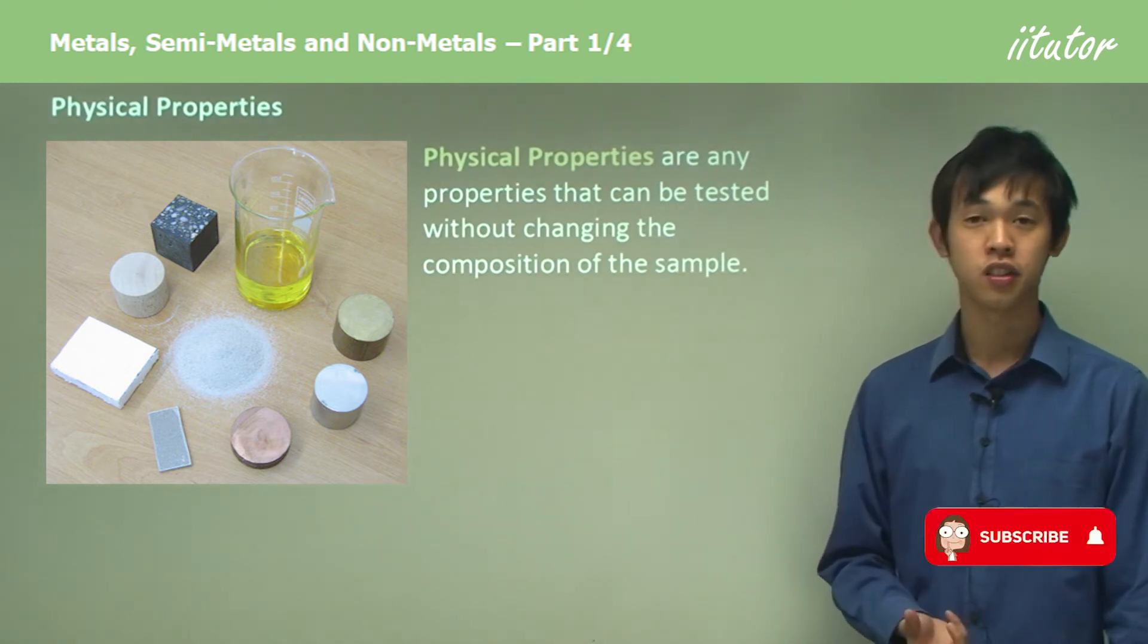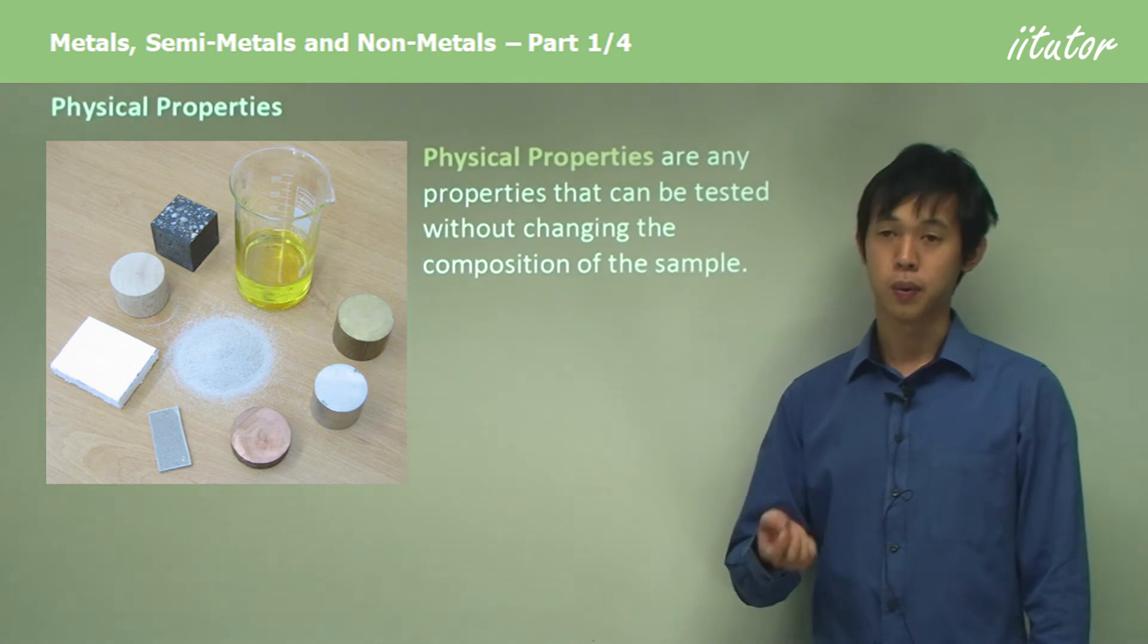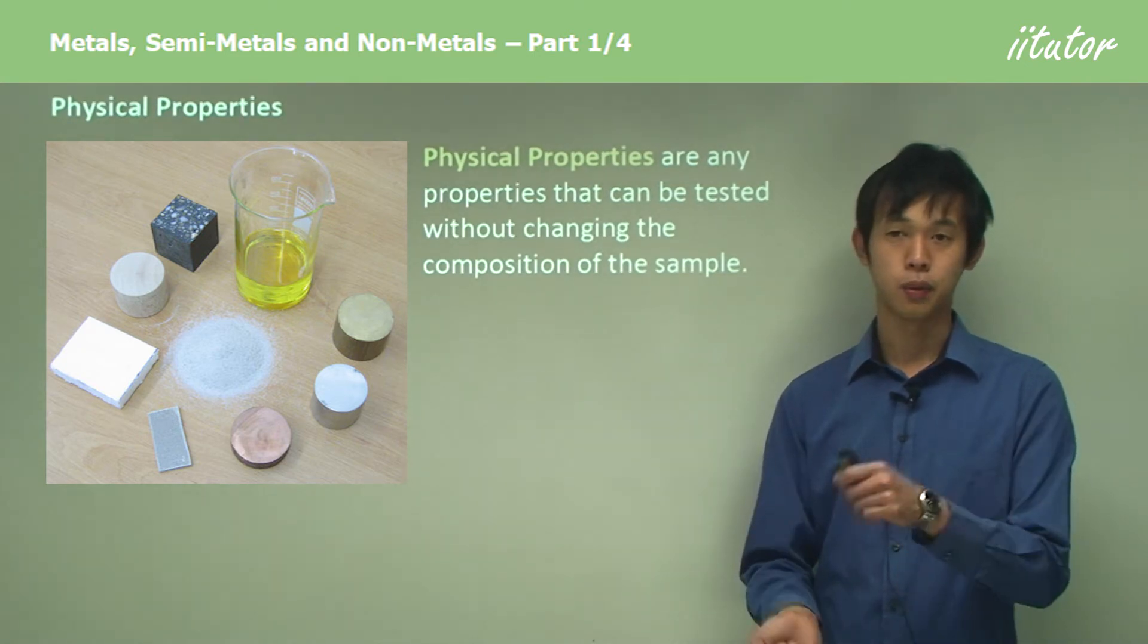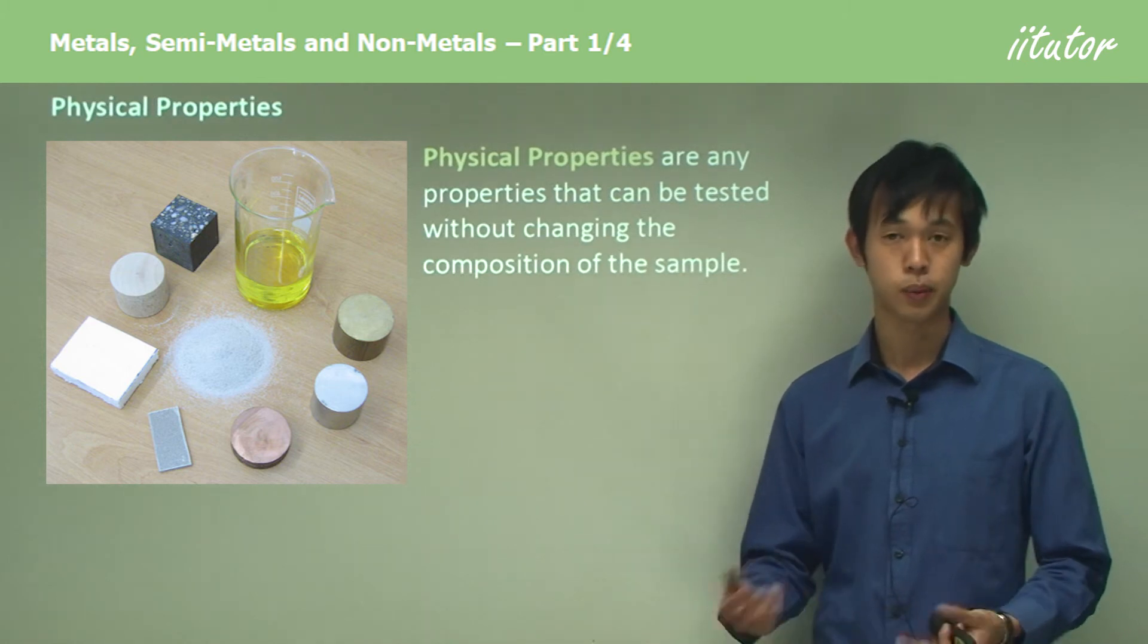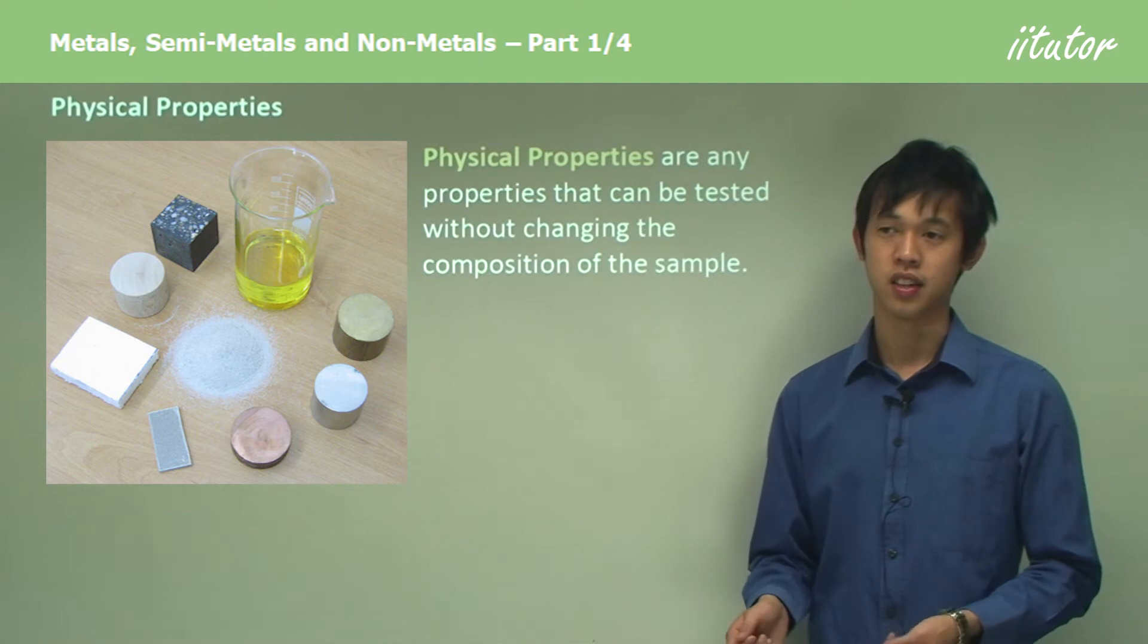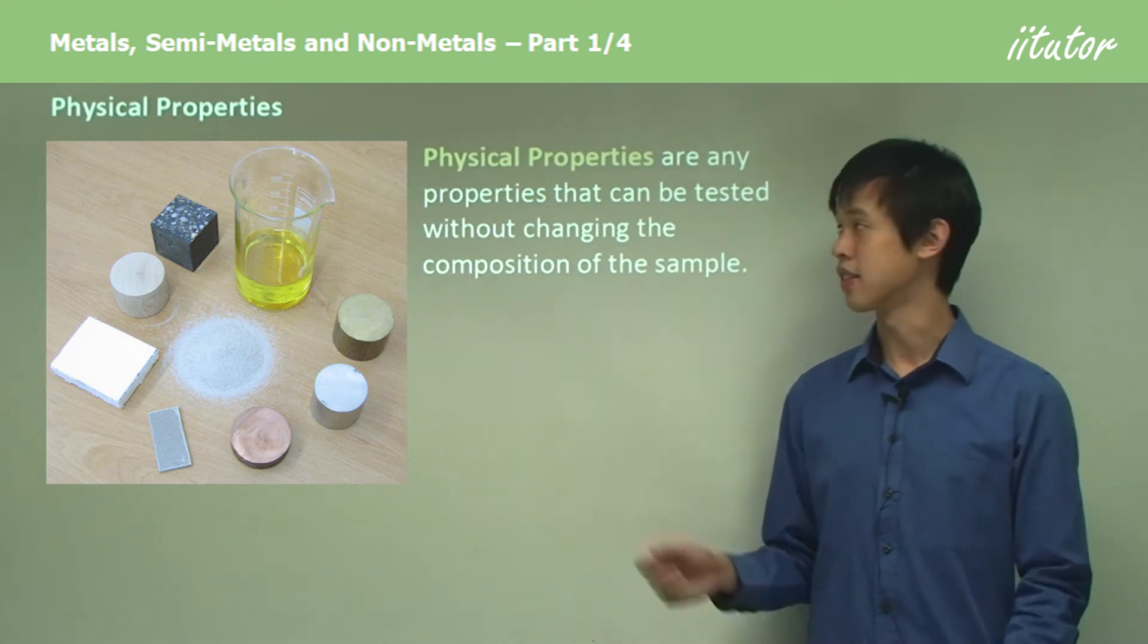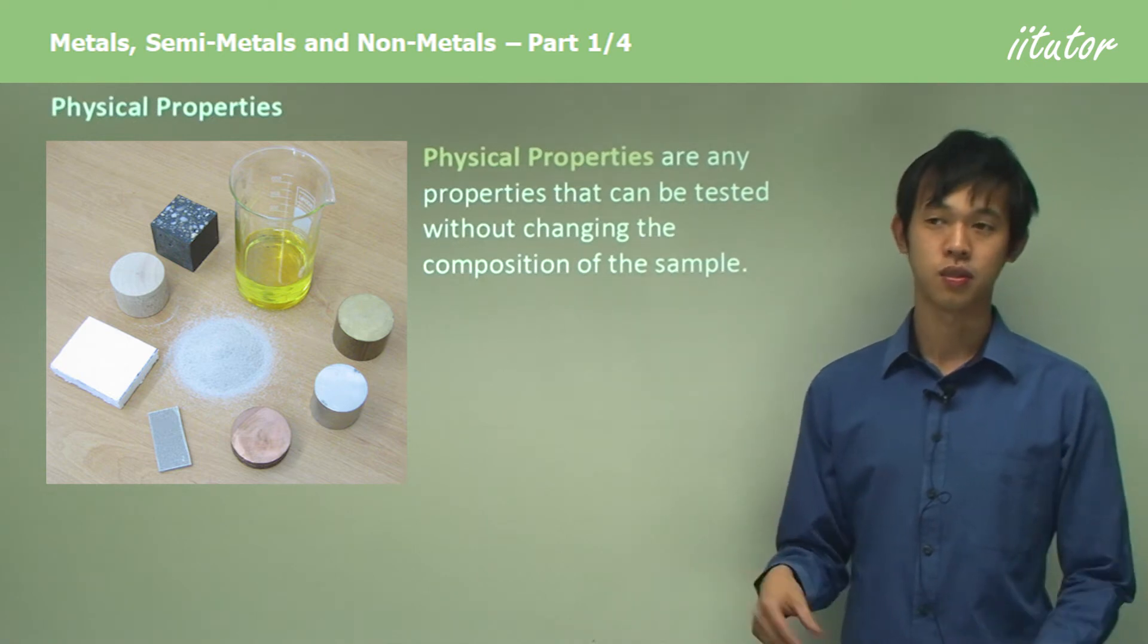For instance, if I had a piece of magnesium and wanted to test its malleability, I could bend it. That doesn't change what's in that piece of magnesium—it's still magnesium—but I can bend it to see how malleable it is or hit it to see how flexible it is. It doesn't change what's inside the sample; it just may change the shape or something like that.